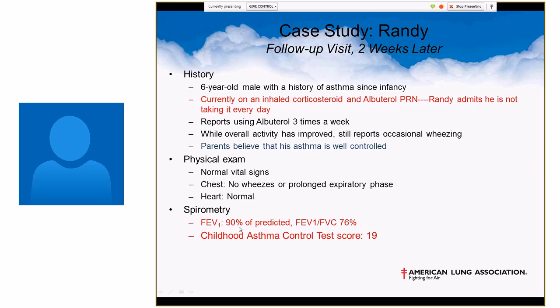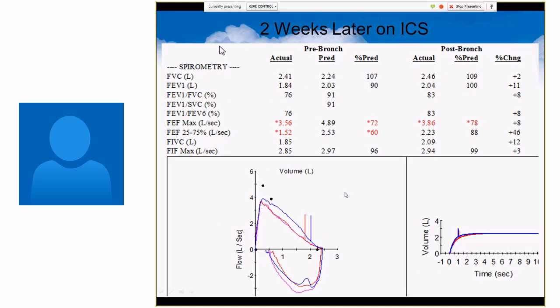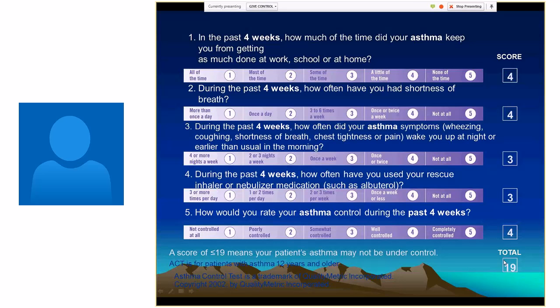Currently on inhaled corticosteroid with albuterol PRN. He admits that he's not taking his steroid every day. He reports using albuterol three times a week, so much improved there. Although his activity has improved, he still reports occasional wheezing. His parents believe that his asthma is well controlled. Vital signs normal, chest no wheeze or prolonged expiratory phase. Now his spirometry suggests an FEV1 of 90% and a ratio of 76. His asthma control score has improved to 19. This is his spirometry after two weeks of being on an inhaled corticosteroid. You notice that the ratio is still kind of down. We have moved his vital capacity up more. His FEV1 is now at 90% as opposed to 84%.